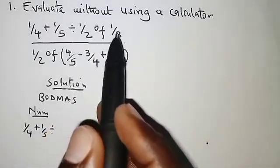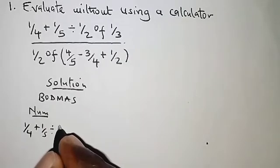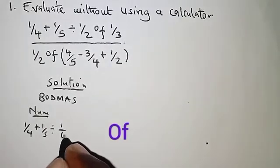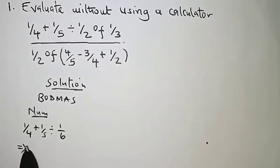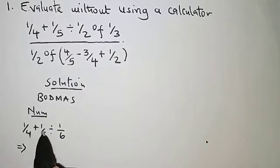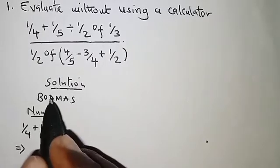One half of one third means one half times one third, and that is one over six. Next we will have one quarter plus one fifth divided by one sixth. The next operation is division.